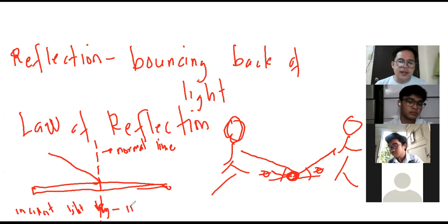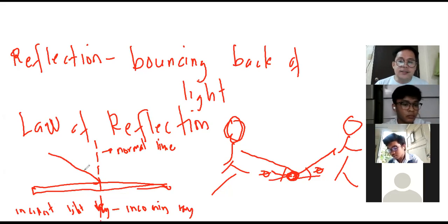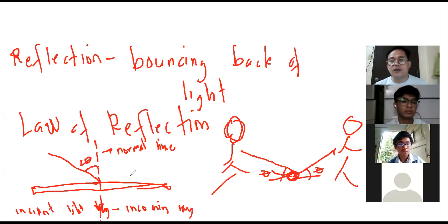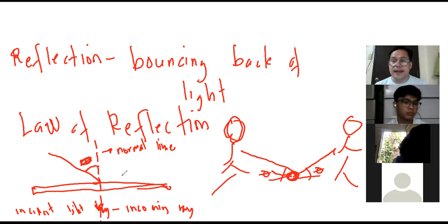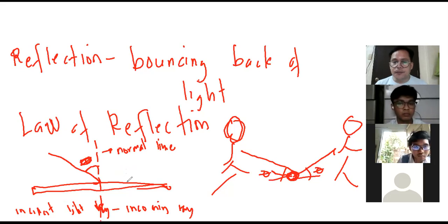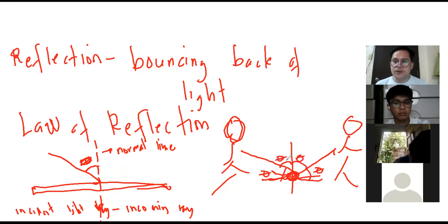When an incident light ray strikes the mirror, the angle of incidence — theta — must be measured from the normal line, not from the mirror. The floor serves as the mirror in the basketball analogy, and the incident angle is measured from the normal line.